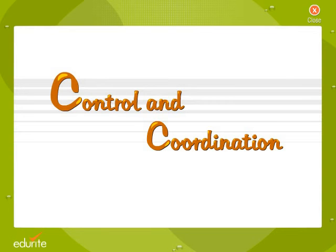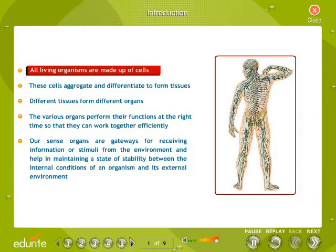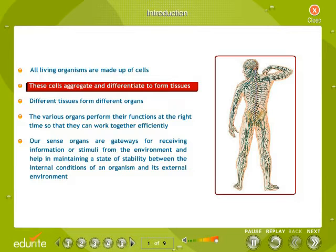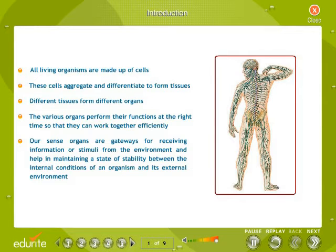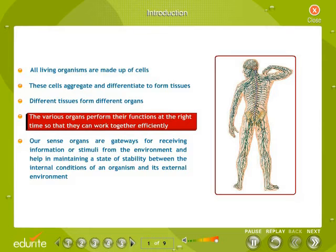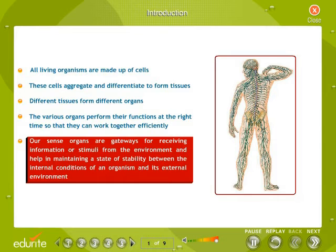Control and Coordination. All living organisms are made up of cells. These cells aggregate and differentiate to form tissues, and different tissues form different organs. The various organs perform their functions at the right time so that they can work together efficiently. Our sense organs are gateways for receiving information or stimuli from the environment and help in maintaining a state of stability between the internal conditions of an organism and its external environment.